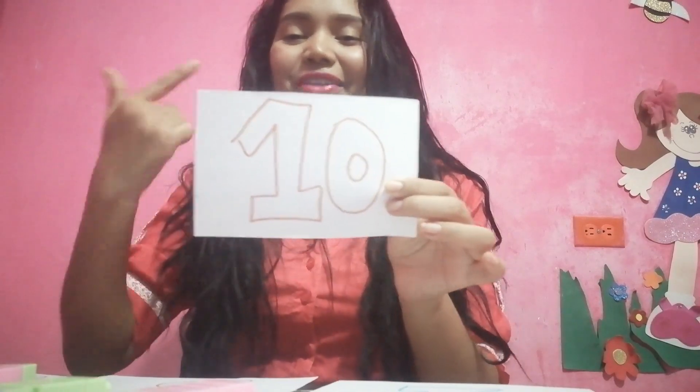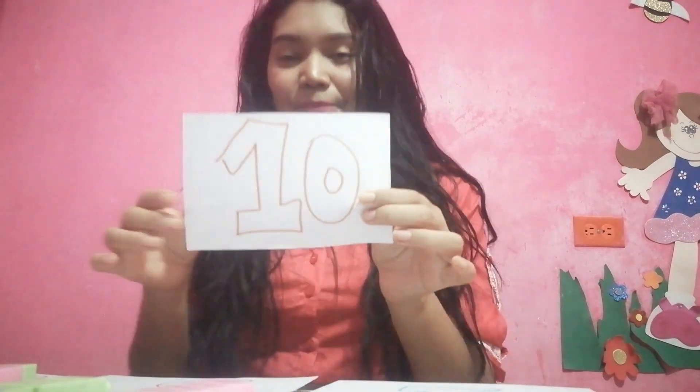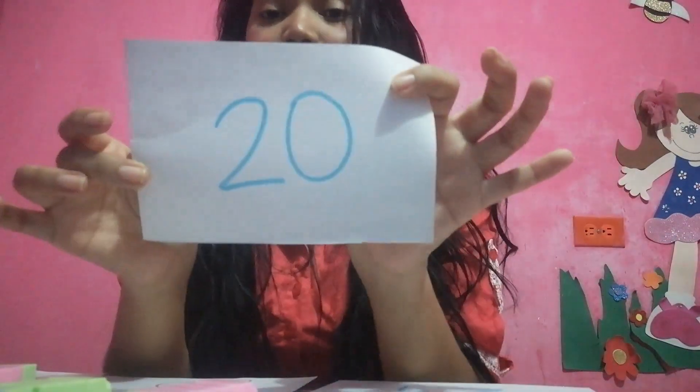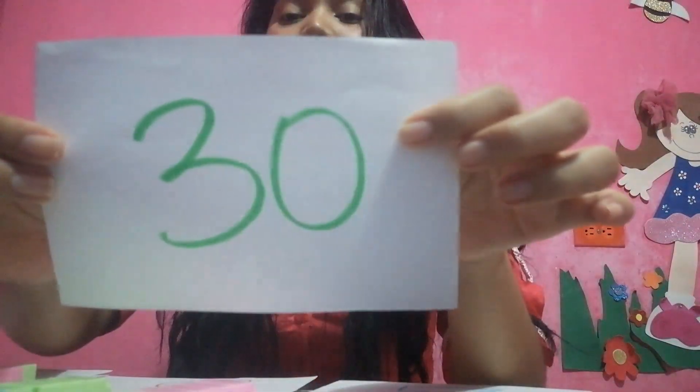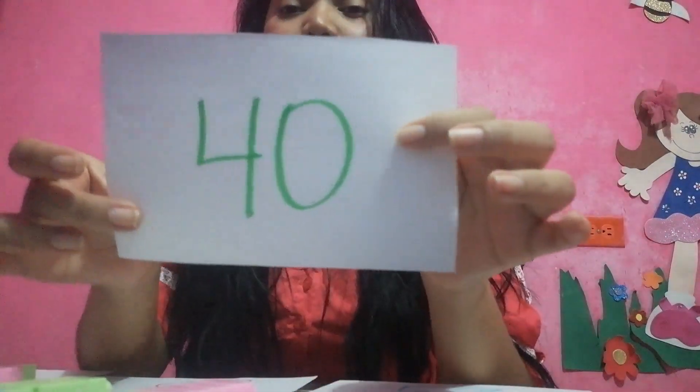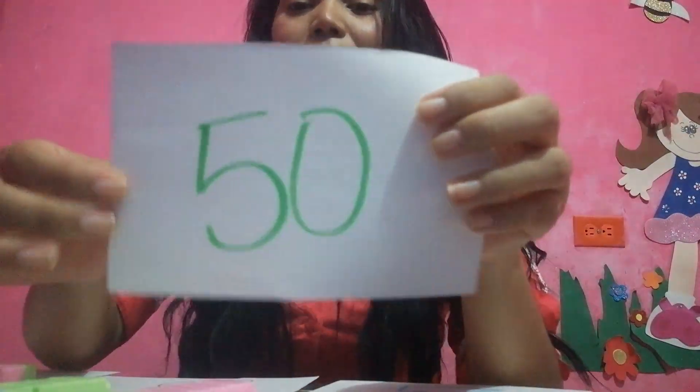So let's remember how to count by ten. We have ten, after ten we need twenty, then we have thirty, then forty, then fifty, then sixty, then seventy, then eighty, and so on. Now you remember how to count by tens.